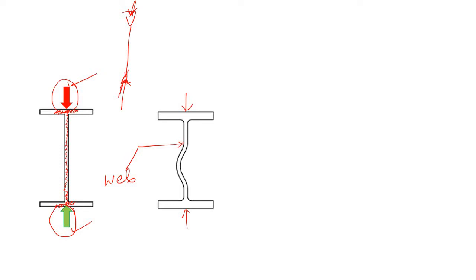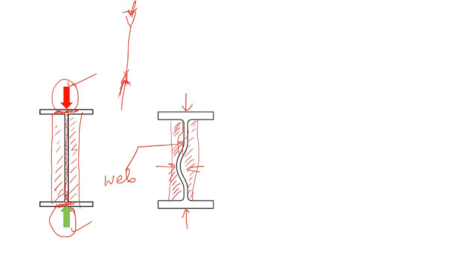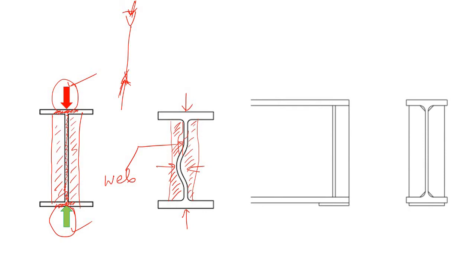To resist this buckling of the web, you have to put some strengthening plate — some lateral support — to resist the buckling. If you hold the web at one point, it won't buckle there but will buckle somewhere else. Throughout the depth of this column, you have to provide lateral support, which is known as a stiffener. We provide the stiffener on both sides of the web.